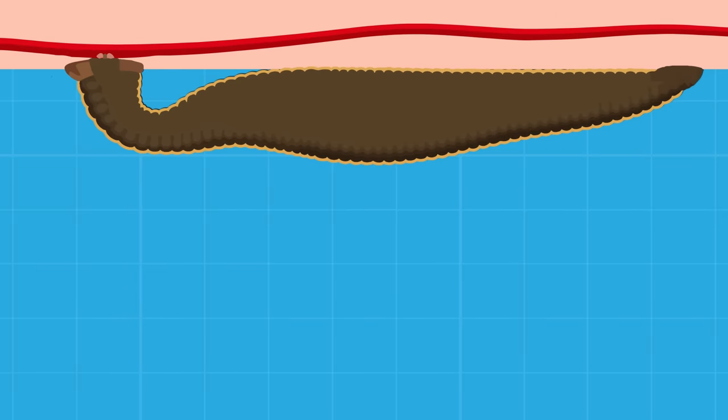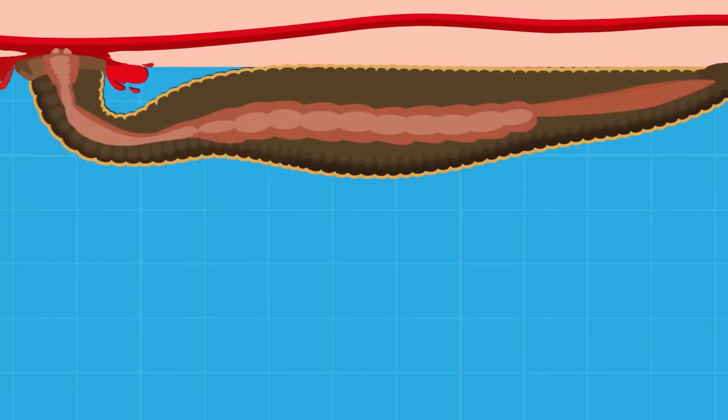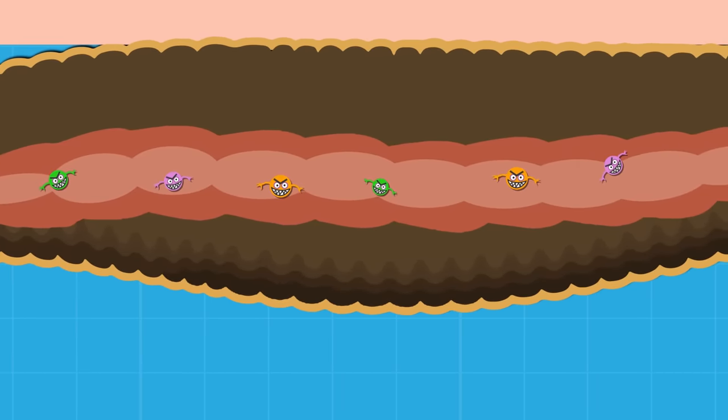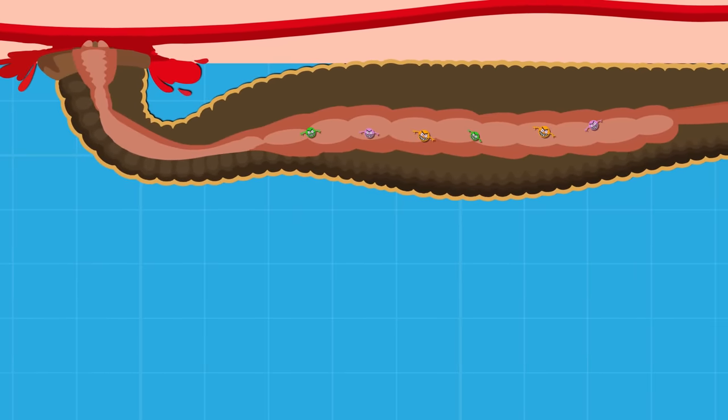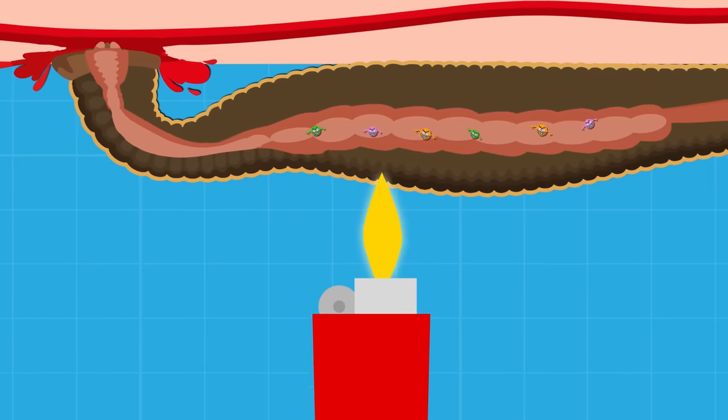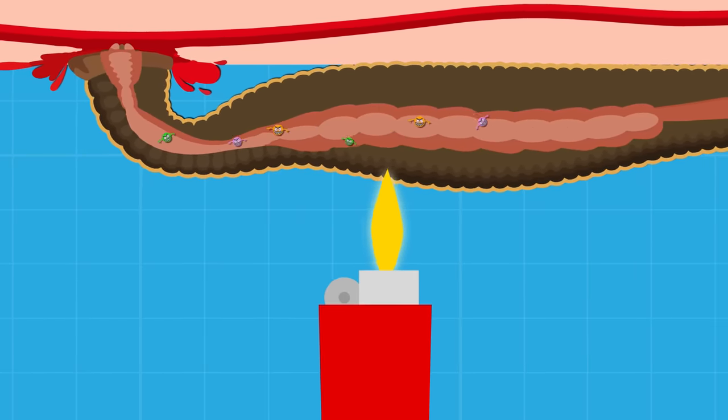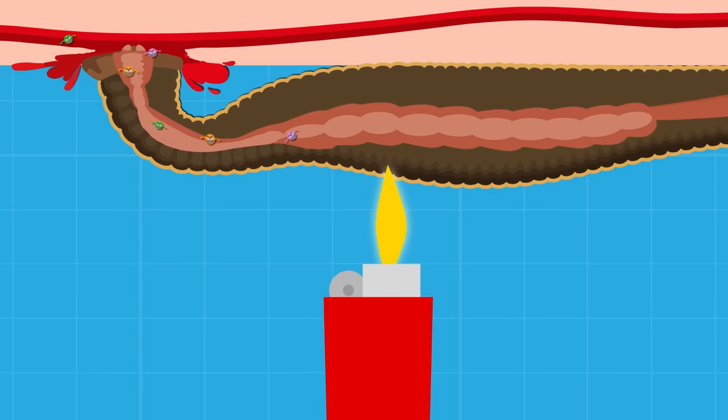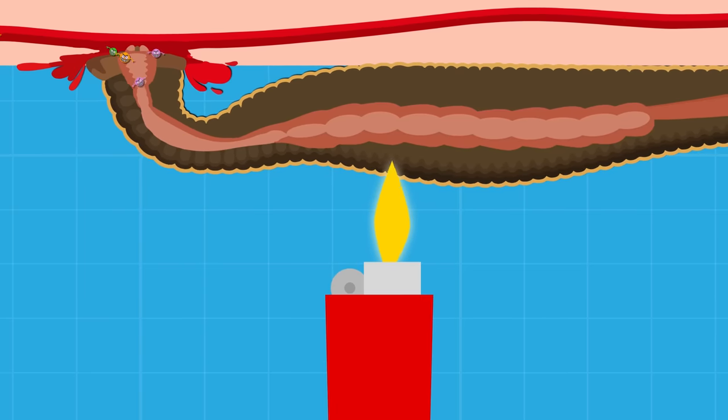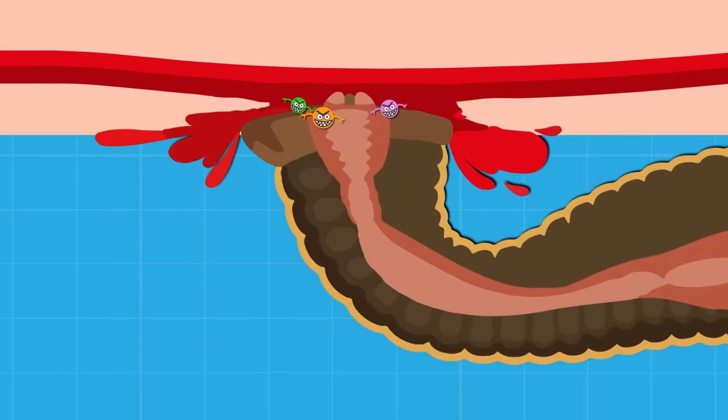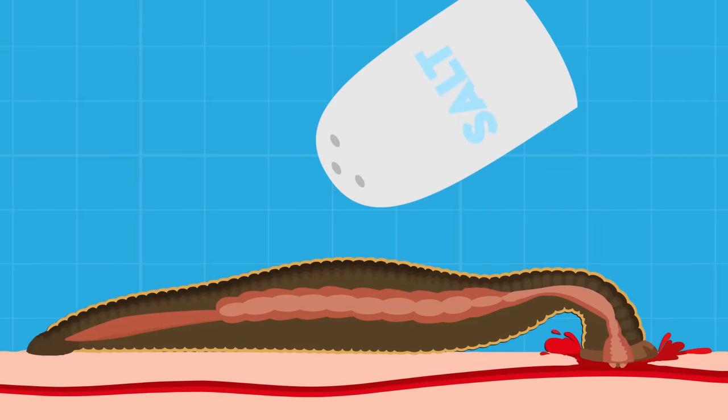Like all animals, including us, the digestive tract of a leech contains a multitude of bacteria. Burning a leech that is attached to your skin could cause it to regurgitate some of the contents of its stomach into the wound it's made on your body. And these microbial invaders could go on to cause infection. Should you pour salt on them to get them off? No. The same problem applies.